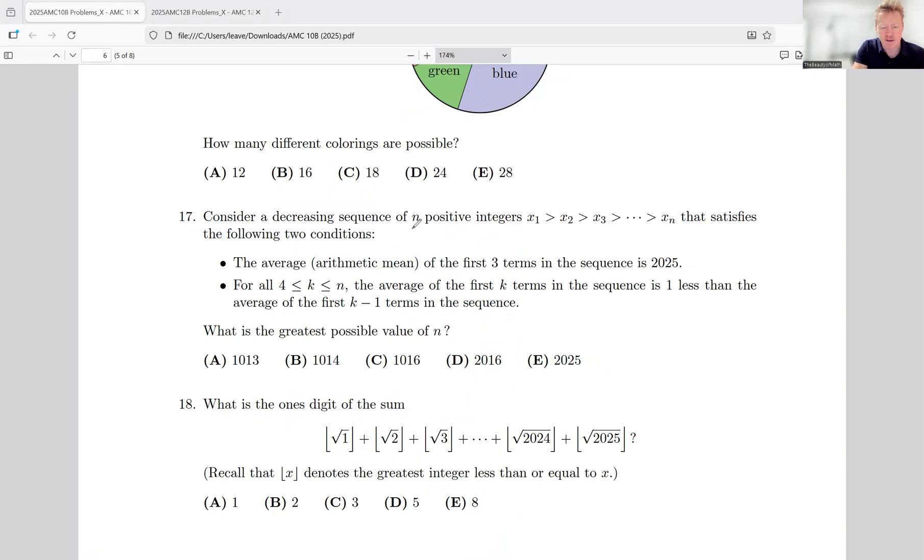Consider a decreasing sequence of n positive integers, so x1 is the max, that satisfies the following two conditions: the average of the first three terms in the sequence is 2025.